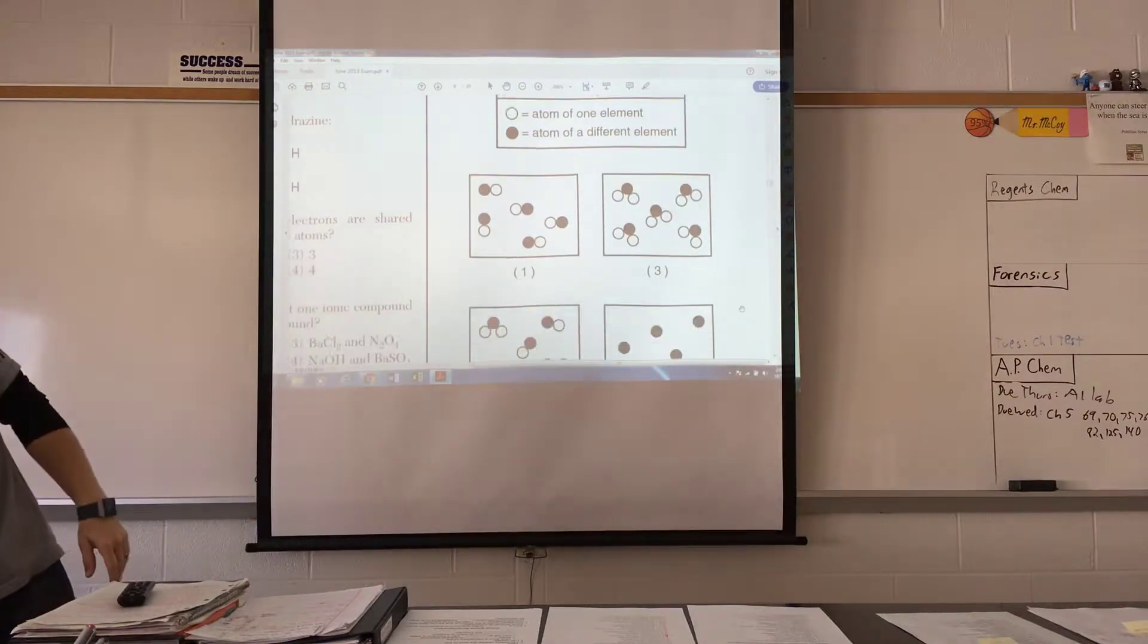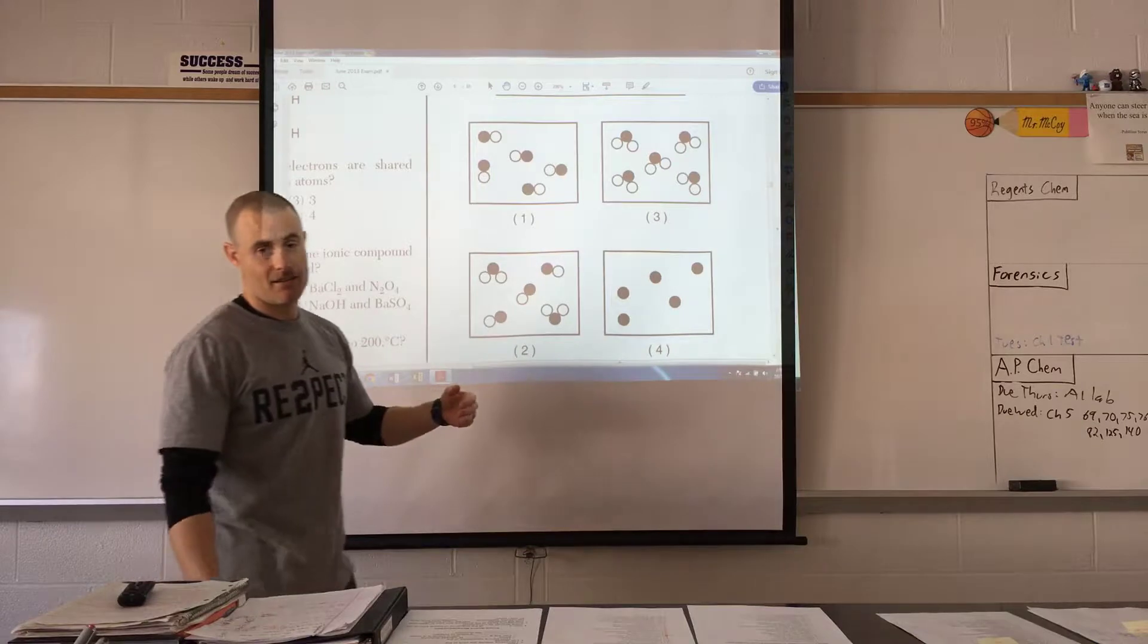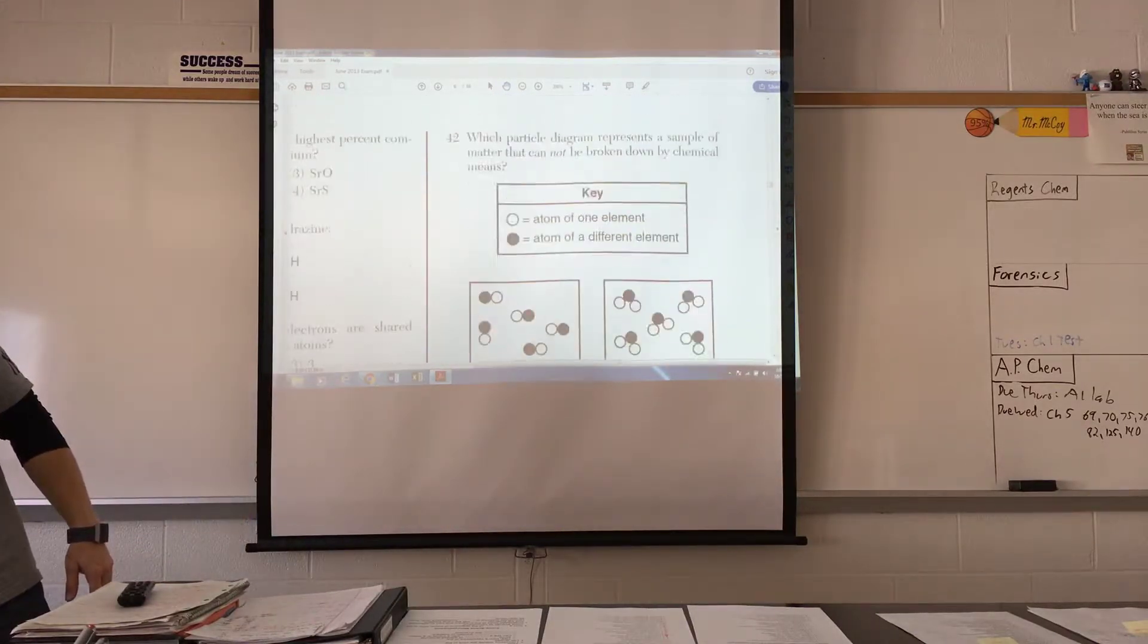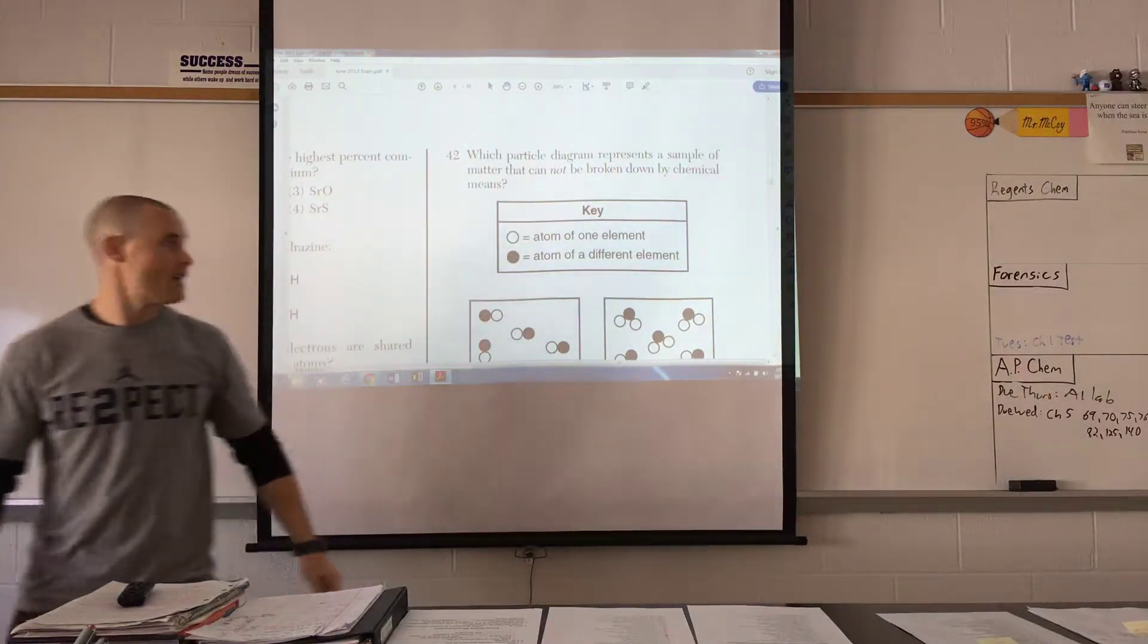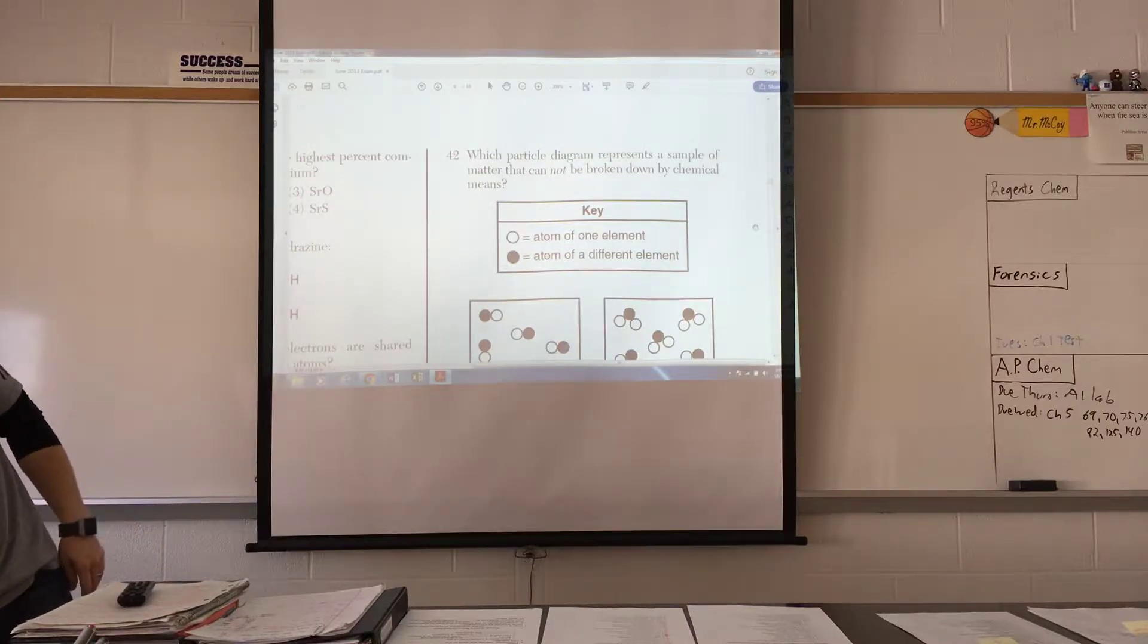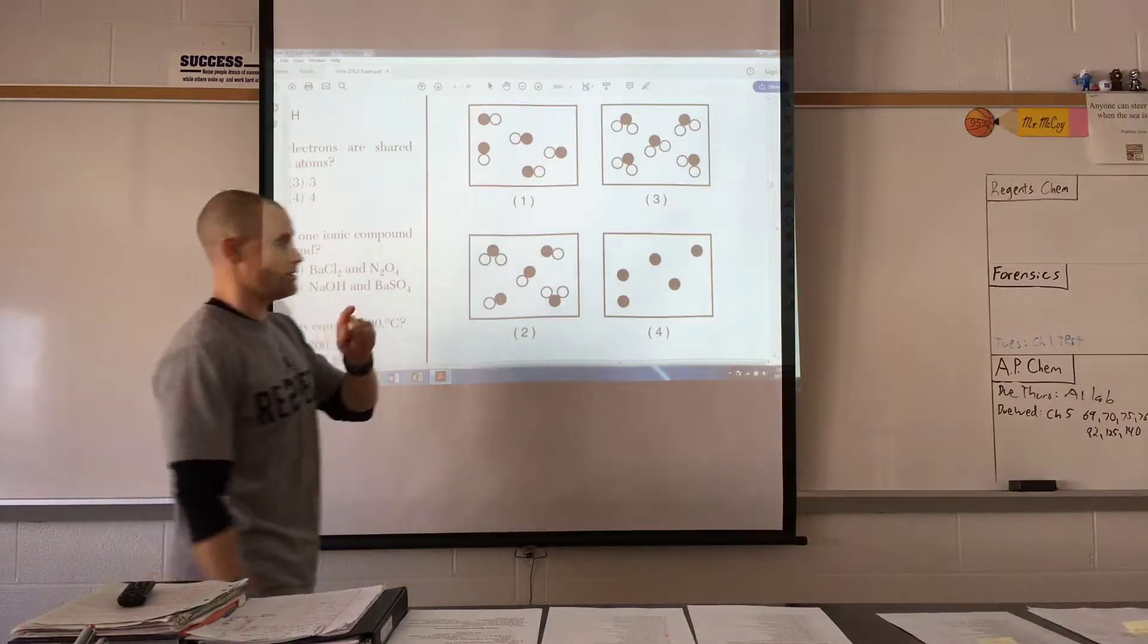The question is, which one, one, two, three, or four, cannot be broken down? Which one cannot be broken down? Which particle diagram represents a sample of matter that cannot, and the not is italicized, be broken down by chemical means? By chemical means is the key. That's important. Cannot be broken down by chemical means.